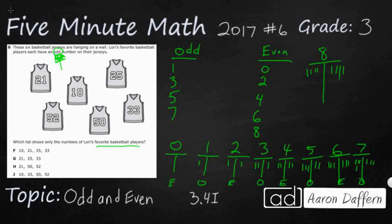Let's do 9: 1, 2, 3, 4, 5, 6, 7, 8, 9 — it is odd. Now take a look at that. We've put every digit from 0 to 9, and they are each skip counting by 2. So 1, 3, 5, 7, 9 are odd and 0, 2, 4, 6, 8 are even.